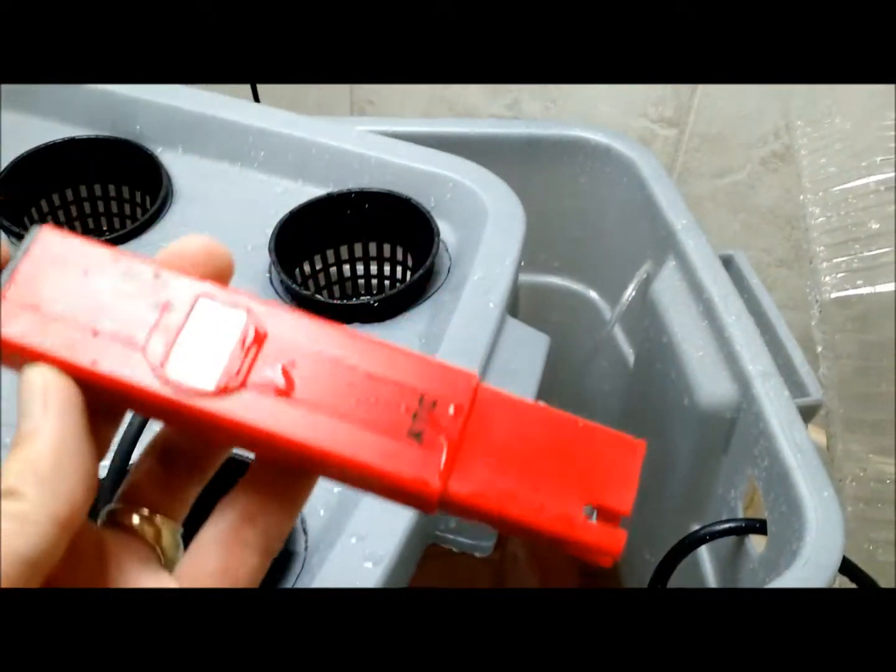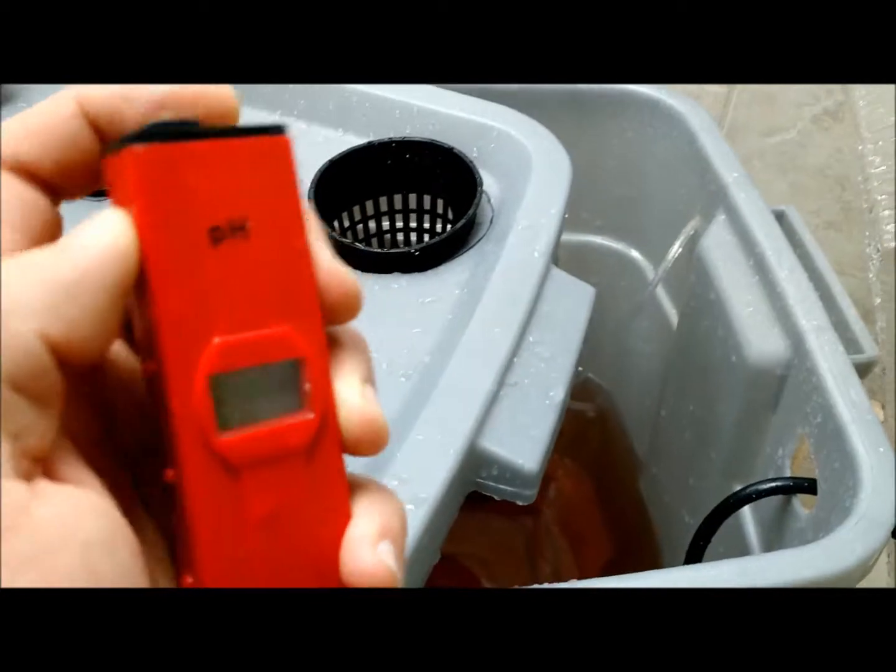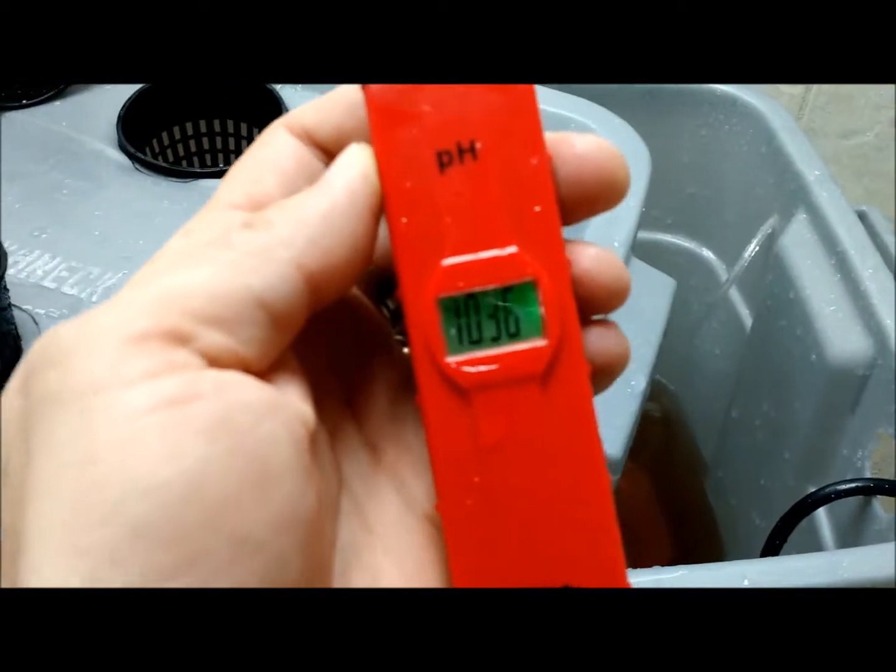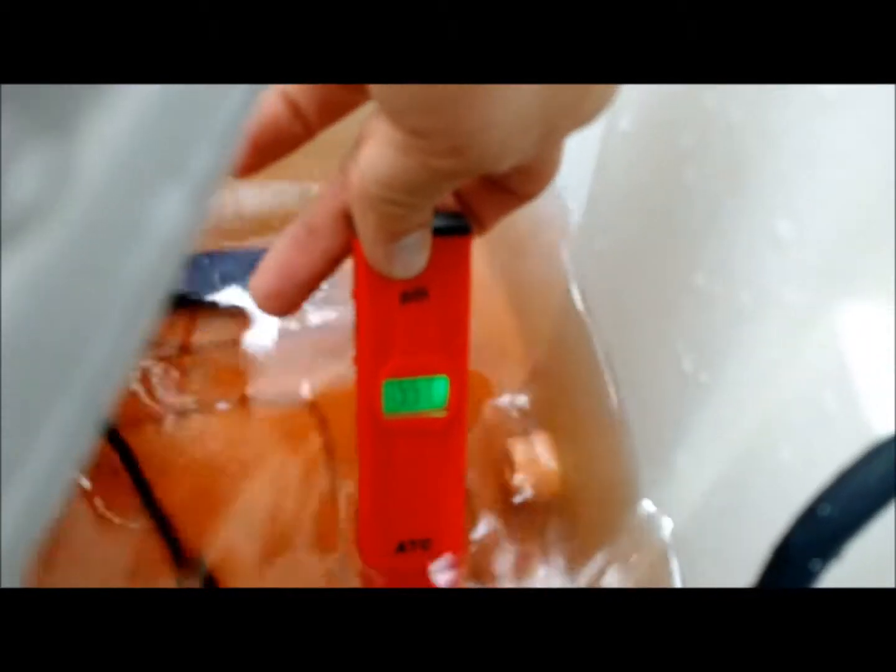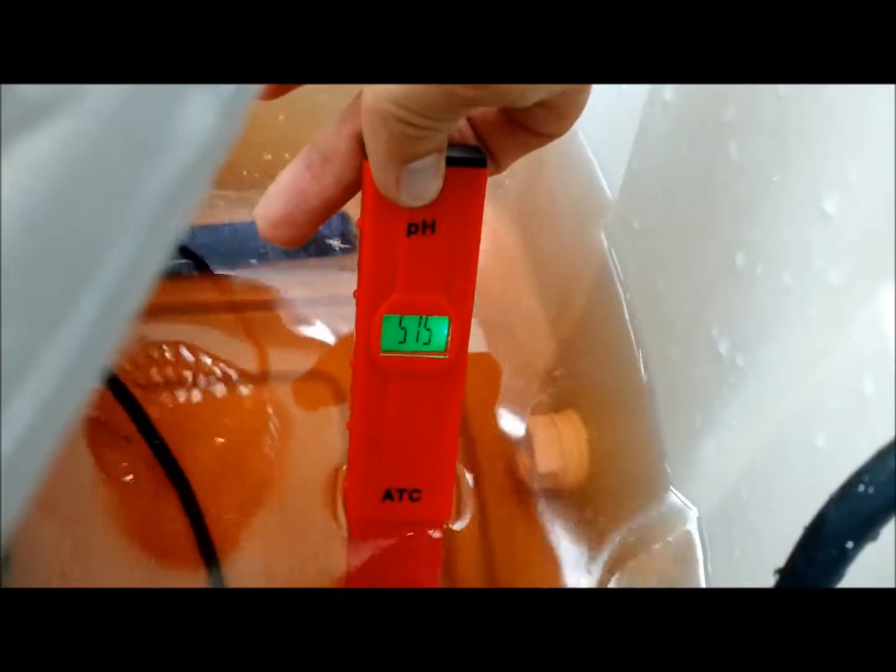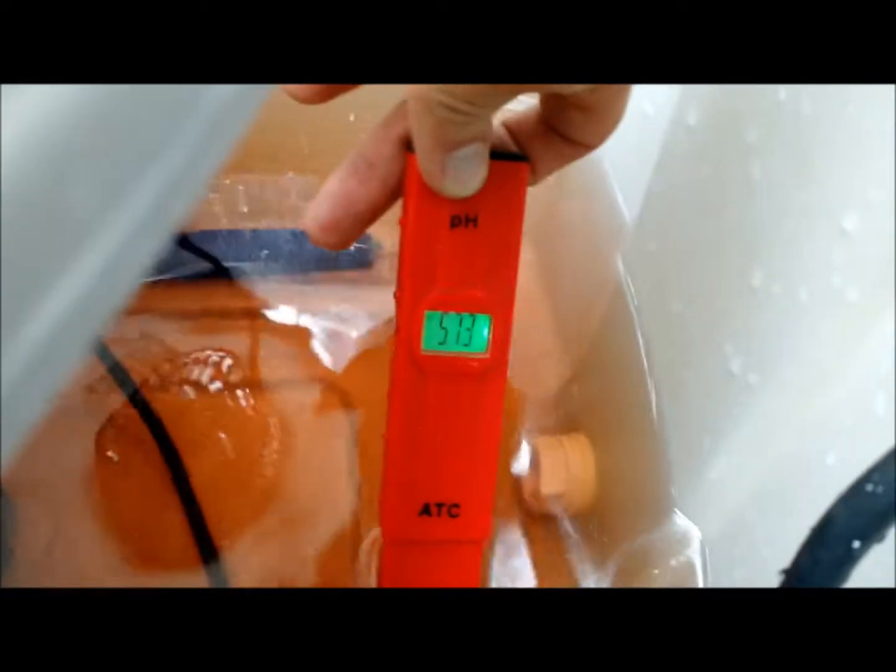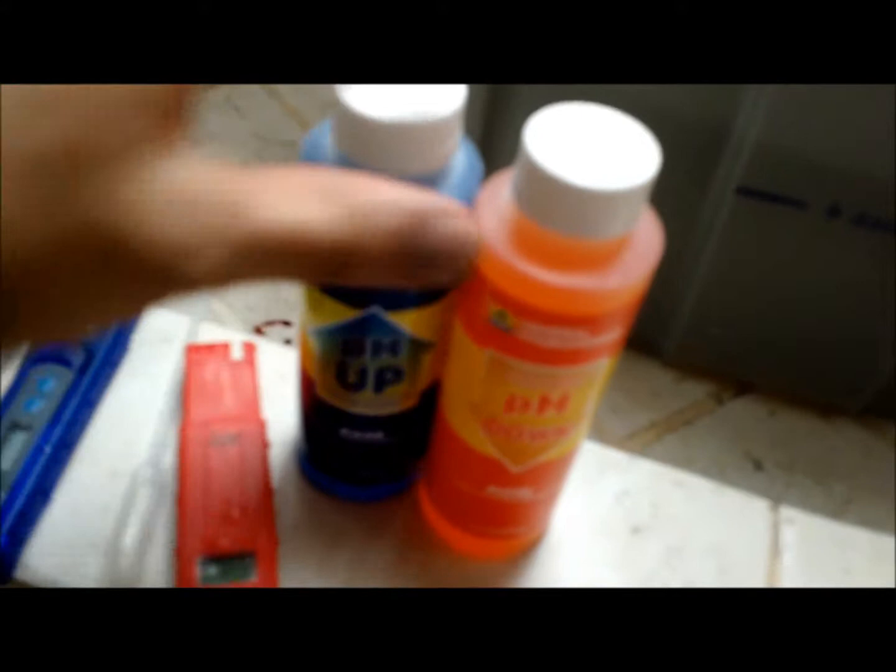Now, this is a pH meter. It measures the pH of the water. What we're looking for is about a 6 pH. So let's see what we've got here. Excellent! So we have a 5.73, which means we don't need to use the other two solutions I have, which are pH up and pH down chemicals. They do exactly what you would think they would. They turn the pH up or they turn the pH down.